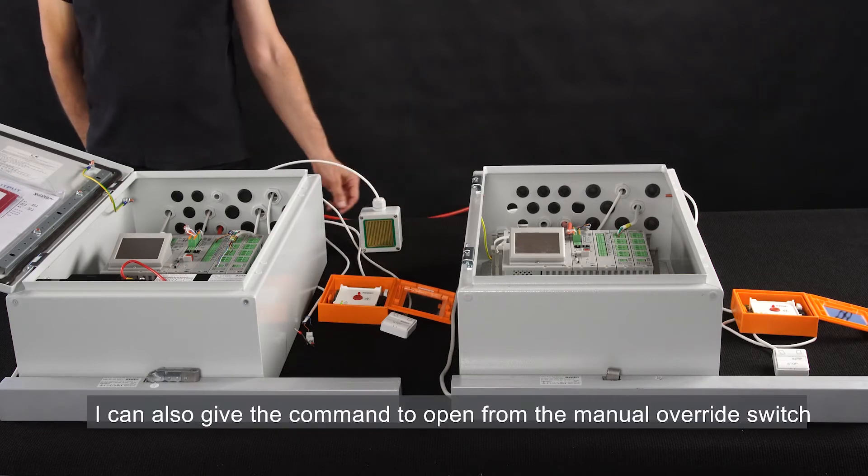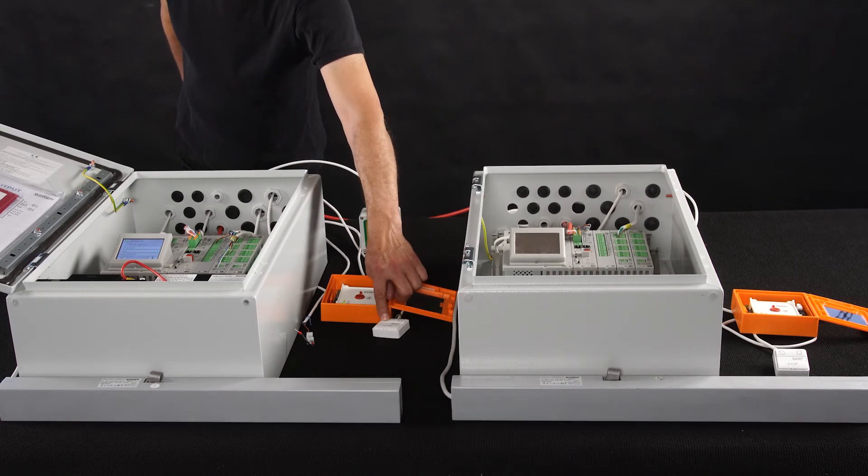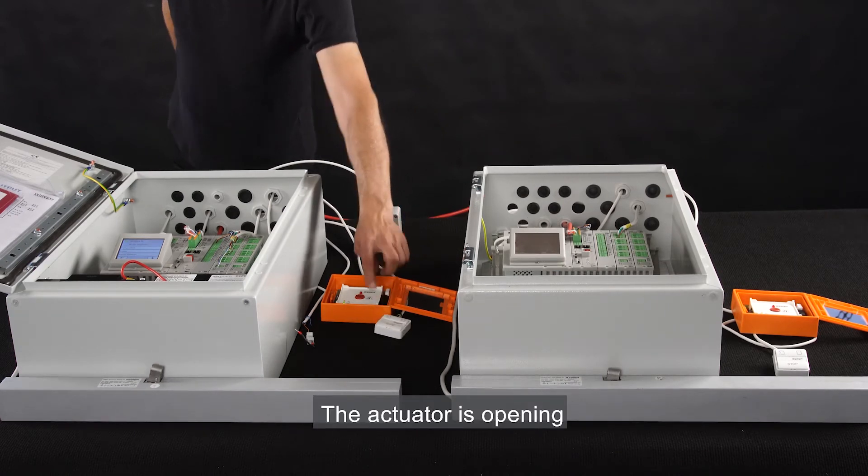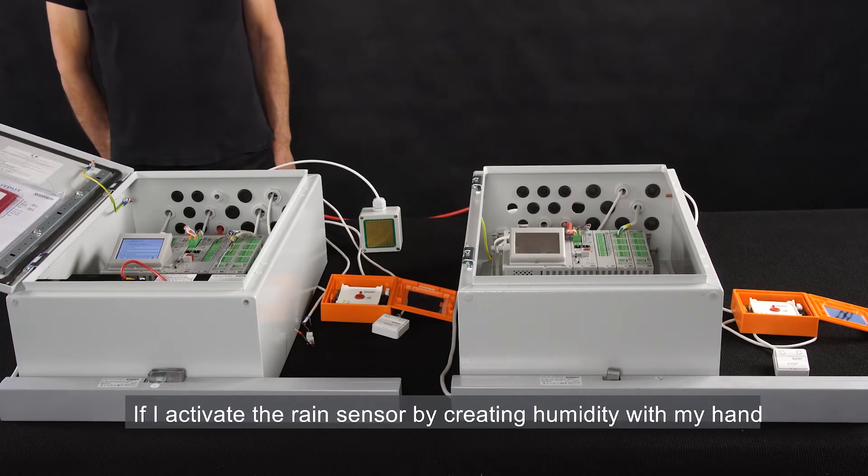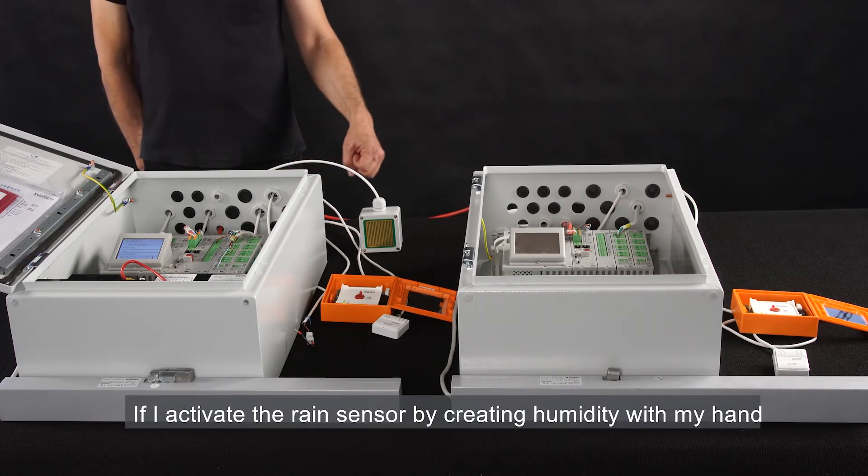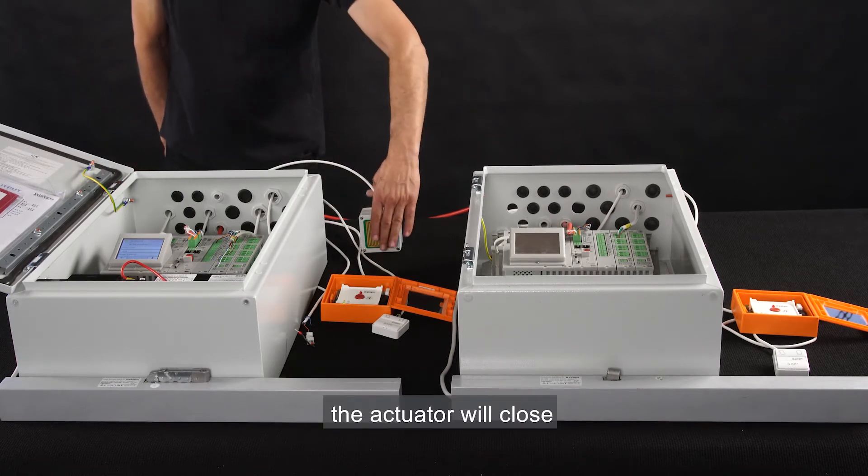I can also give the command to open from the manual override switch. The actuator is opening. If I activate the rain sensor by creating humidity with my hand, the actuator will close.